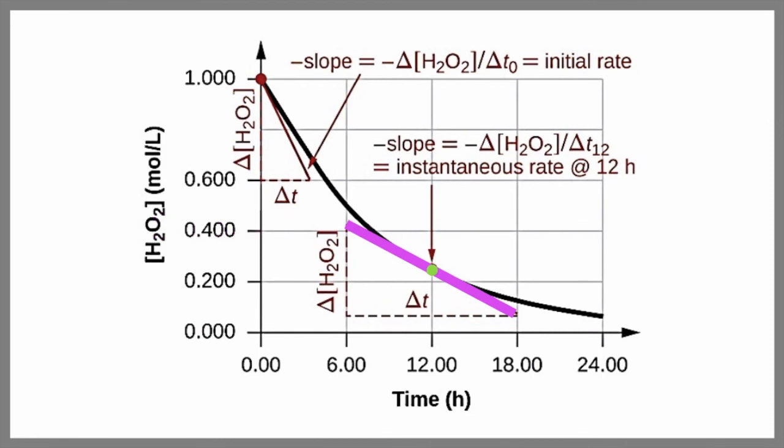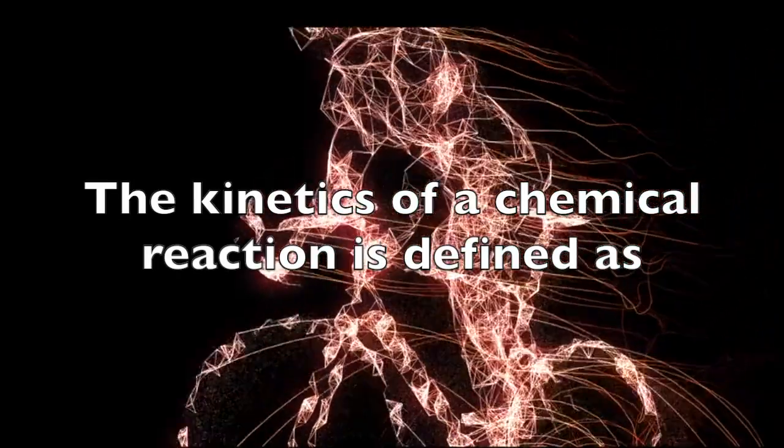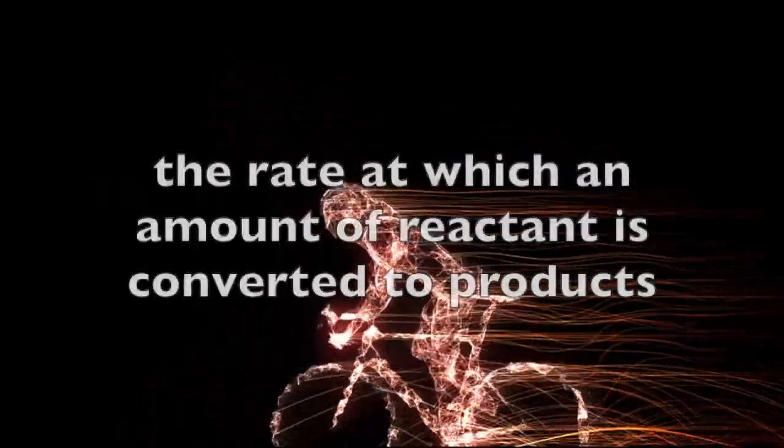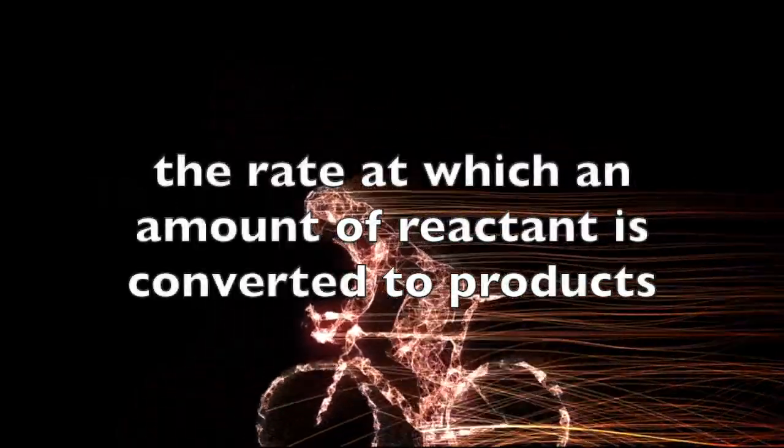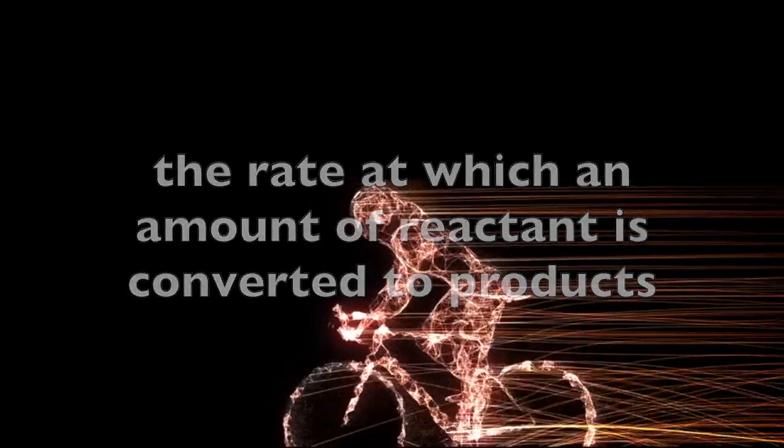Now, we can also use calculus to derive this, but we don't need to in AP Chemistry. In summary, the kinetics of a chemical reaction is defined as the rate at which an amount of reactant is converted to products per unit time.